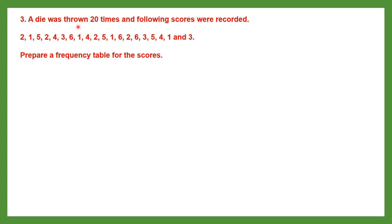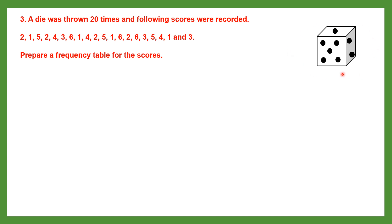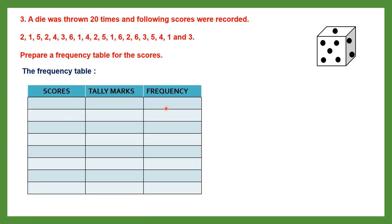Question 3: a die was thrown 20 times and the following scores were recorded. A die is a cube used in games. We need to prepare a frequency table for the scores. The table has three columns, and the first column will be labelled scores or numbers. First, arrange the data in ascending order.